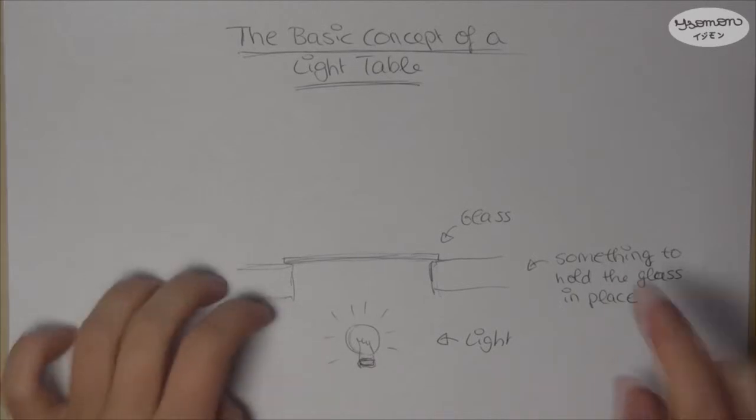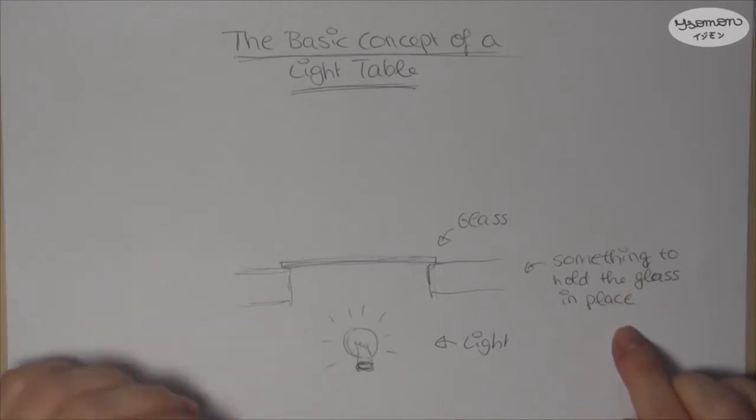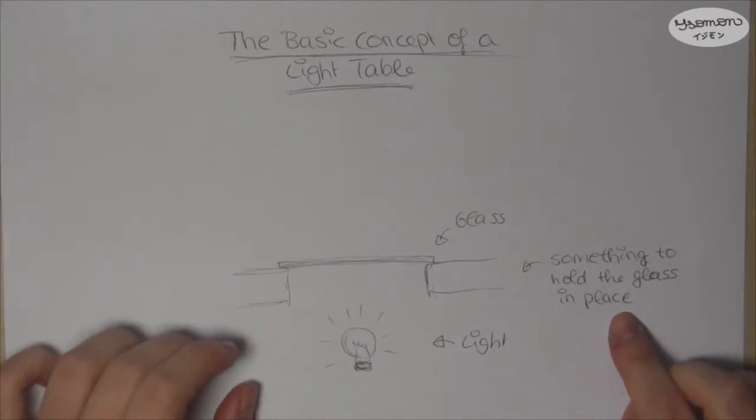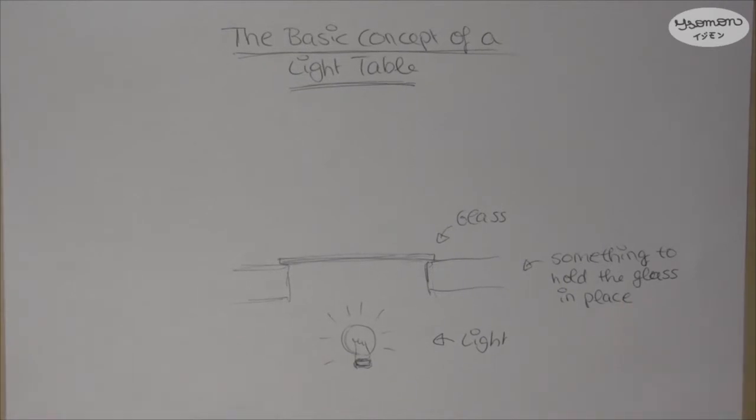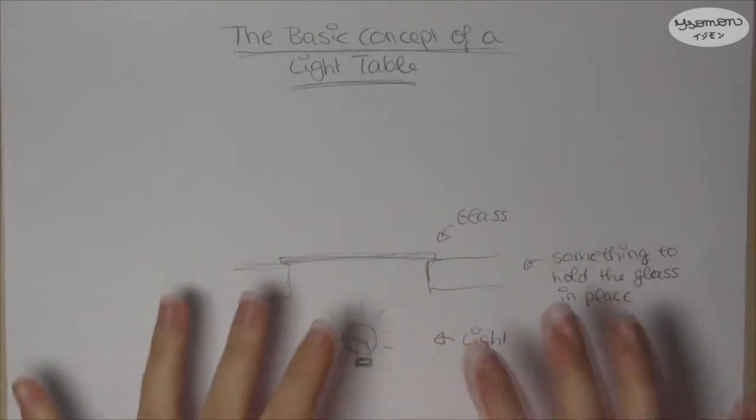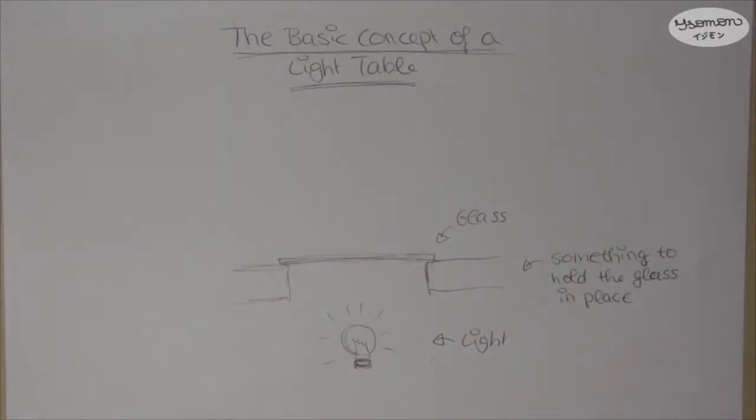And the third thing is something to hold the glass in place and this is the part where you can get really creative. However, I wanted to have a light table which is integrated into my table because my table has the height I like to work on when I'm working on my art and I don't want anything that is placed on top of my table because that will alter this height and I'm going to show you the setup of my light table in a second.